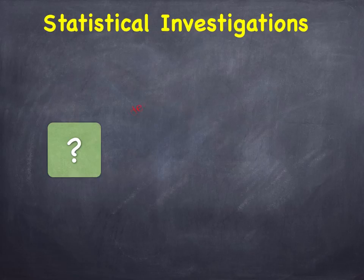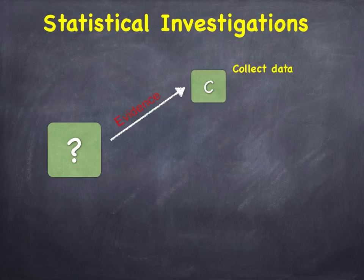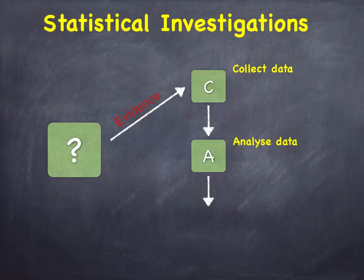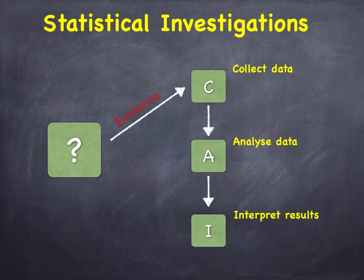To answer a question sensibly you normally need to gather evidence, and with a statistical investigation this normally takes the form of collecting data. Having collected the data, the next stage is to analyze it. Stage three is to interpret what has been done in stage two, and the investigation is complete when you've returned to the original question and confirmed that you've answered it.